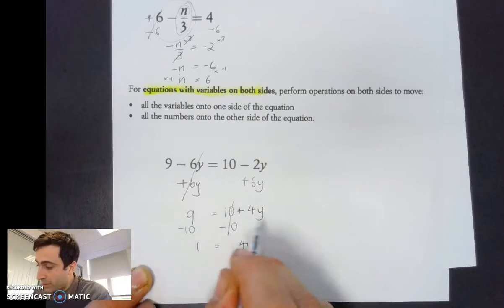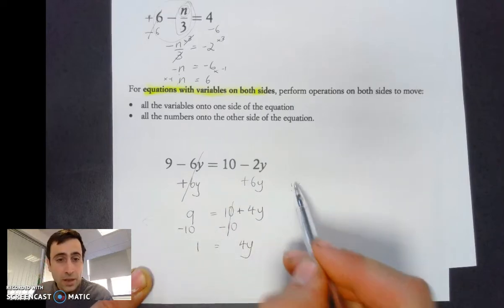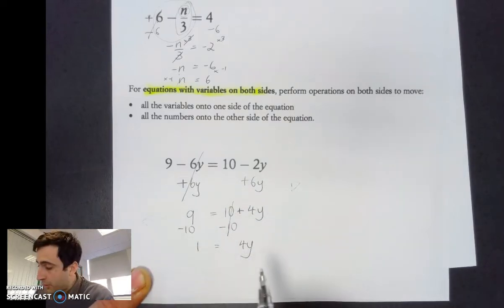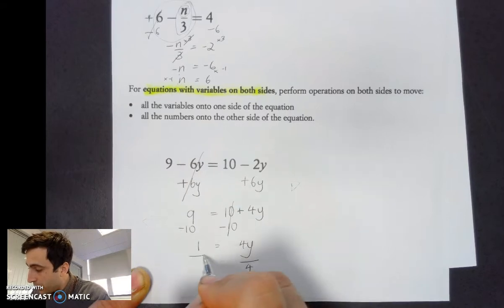What we've done, all I've done is I've moved the numbers to this side. I've moved all the letters to that side. And we've got an equation now that we can deal with. Negative 1 equals 4y. Let's divide both sides by 4. And we have y equals 1 quarter.